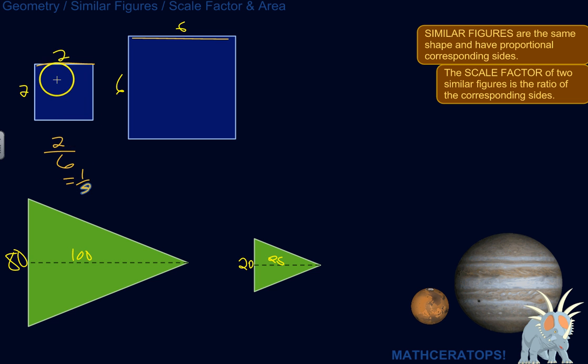So that's the scale factor when you go from the small to the large. We could have gone the other way, the ratio of 6 to 2. In other words, the large square is 3 times as big as the small one, or the small square is 1 third the size of the large one.